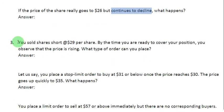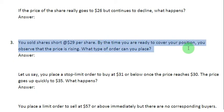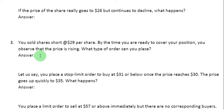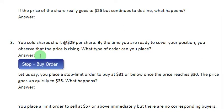Let us look at question number three. You sold some shares short at the rate of $29 per share. By the time you are ready to cover your position, you observe that the price is rising. What type of order can you place? You short sold some shares, so ideally when you cover your position you would have expected the price to have fallen. But since the price is rising, you are going to want to curb your losses. You will tell your broker to wait up to a certain level and then, if the price continues to rise, just buy the stock and cover your position. Therefore, the type of order you can place is a stop order to buy.